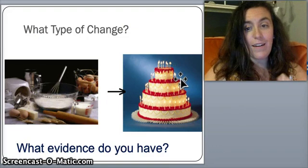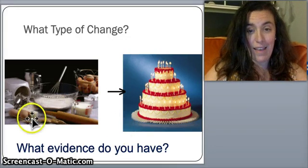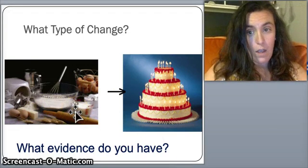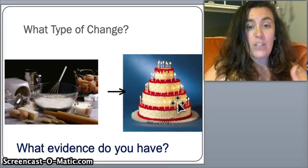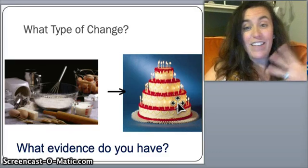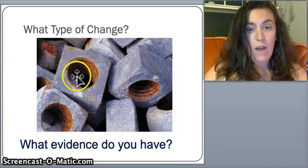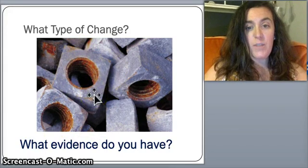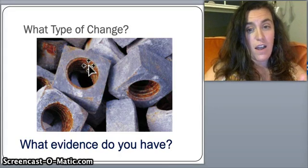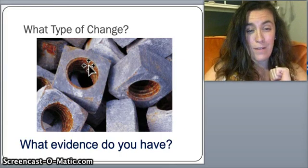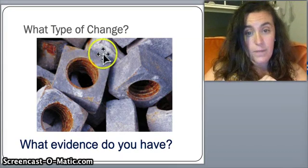Next: a birthday cake. We started with ingredients and now have a beautiful cake — that's a chemical change. Can you get back the eggs, flour, and milk? No. Evidence: color change while baking, and a change in smell. How about rust? Metal exposed to oxygen and water creates rust — that's a chemical change. There's a color change and the smell of rust, and rust is not the same substance as metal.